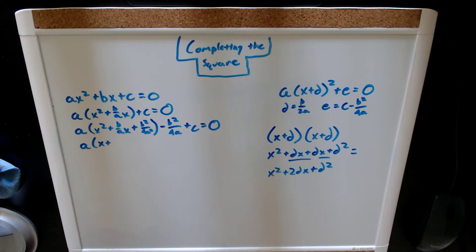And as you can see, if we substitute in b over a for d, sorry, b over 2a for d, we get that times two, or that squared.